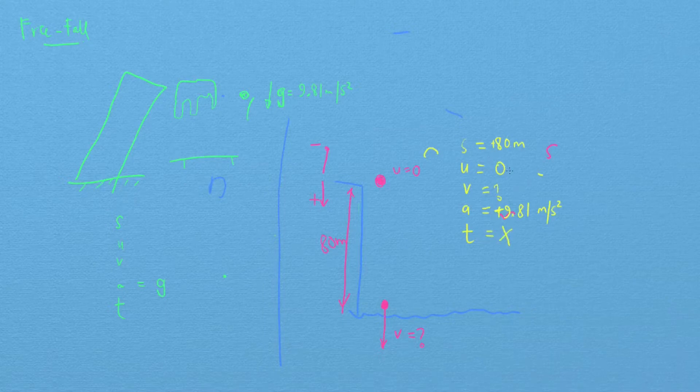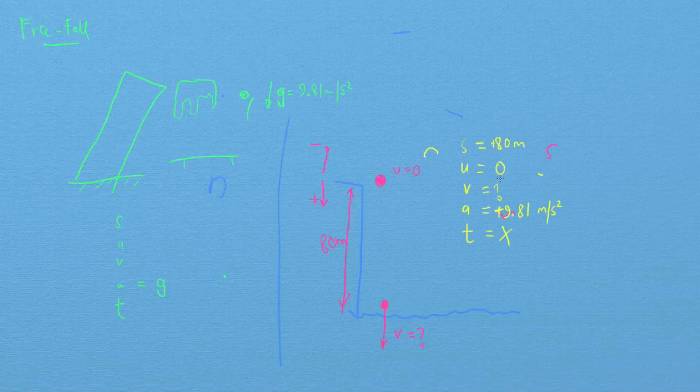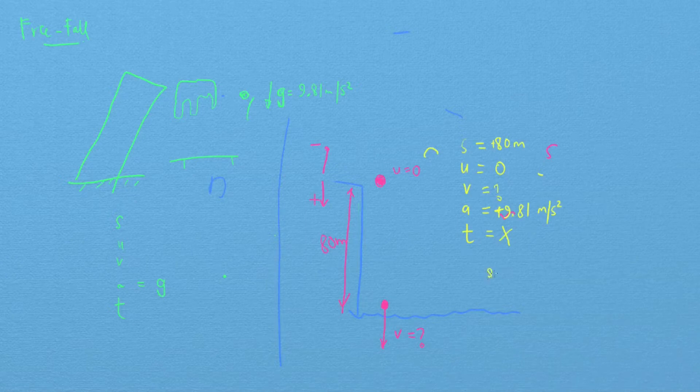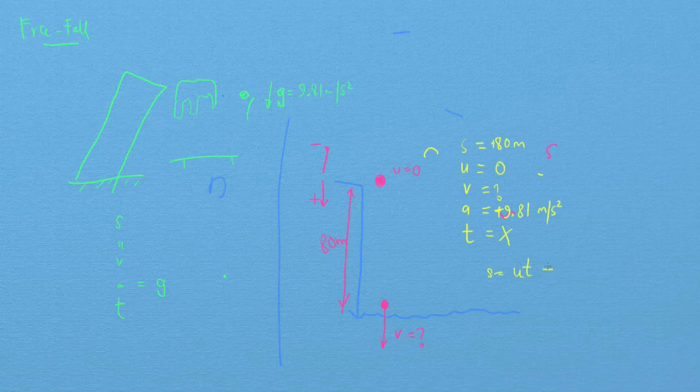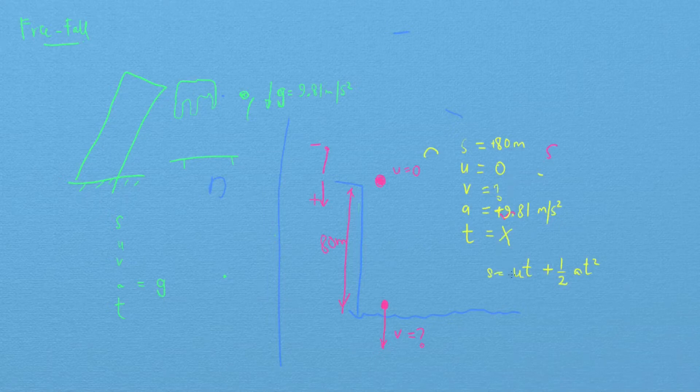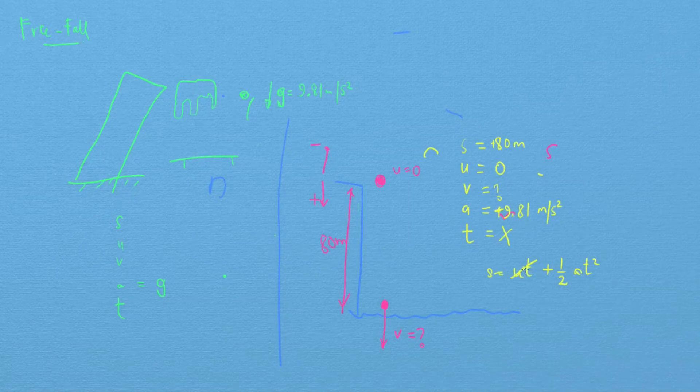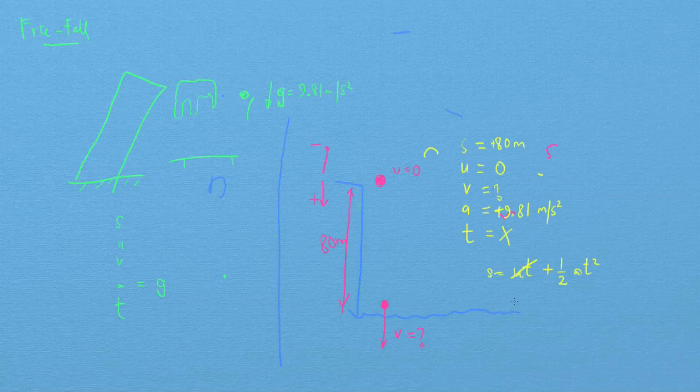If you refer back to our kinematic equations and look at which one does not contain V, you'll find that the equation is S equals U T plus half A T squared. The initial velocity is zero, hence this first quantity vanishes because zero times anything is zero, and I'm solving for the final velocity.